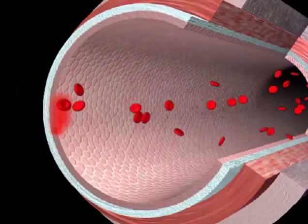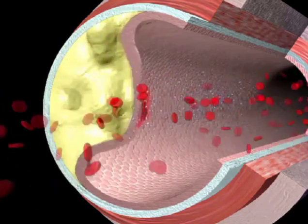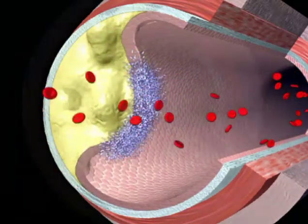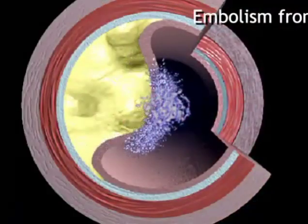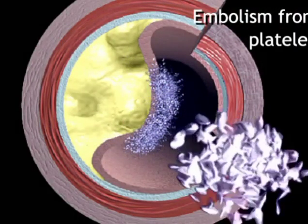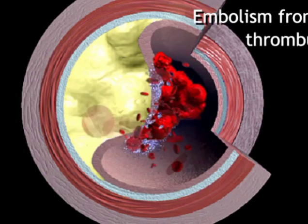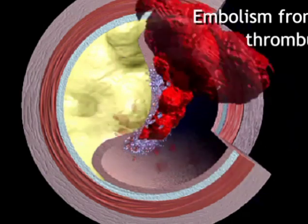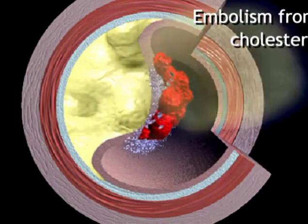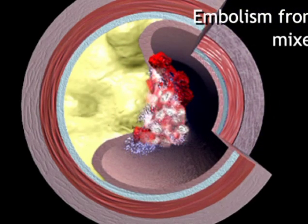When an arterial wall becomes damaged, various types of emboli, or obstructions, can form. Emboli can be made up of various substances such as platelets, elements in the blood that help it clot, blood clots that form elsewhere and pass to the damaged area, cholesterol, or a combination of things.